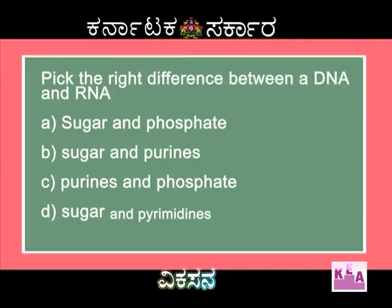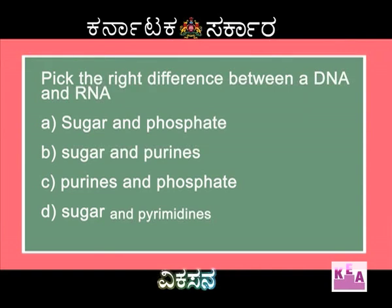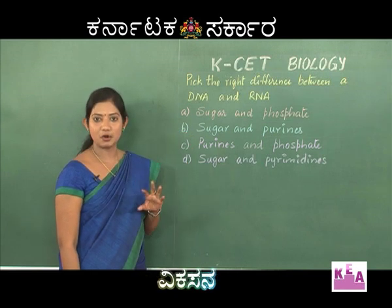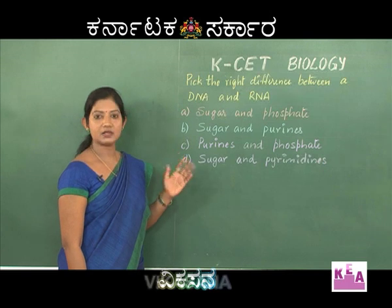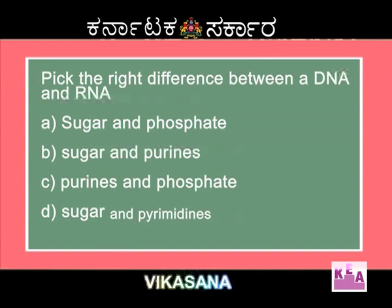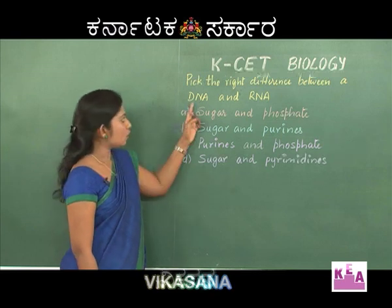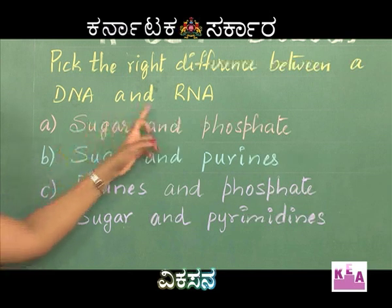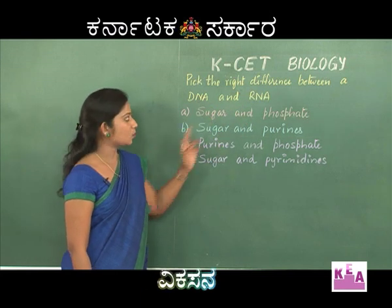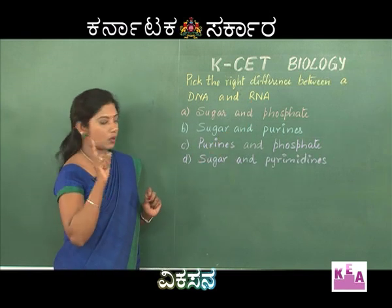The next question: pick the right difference between a DNA and an RNA. Options are: A — sugar and phosphate, B — sugar and purines, C — purines and phosphate, D — sugar and pyrimidines. We are all aware that DNA and RNA are basically made up of three components: sugar, nitrogen base, and phosphate. When we expand the names, DNA is deoxyribonucleic acid and RNA is ribonucleic acid. In DNA there is one oxygen less when compared to RNA, so one difference is in sugar.